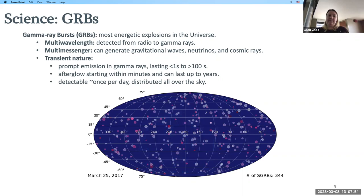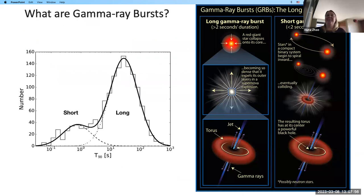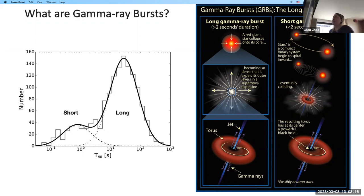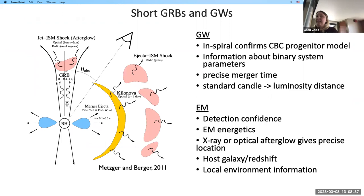Looking at the distribution of GRBs split by duration, you see a bimodal distribution of short and long GRBs — it has long been thought they come from different progenitors. Long gamma-ray bursts come from core-collapse supernovae, while short gamma-ray bursts are thought to come from compact binary mergers such as binary neutron stars or neutron star-black hole mergers. With the onset of gravitational wave detections through LIGO and Virgo, we have much more information about where these short GRBs come from.